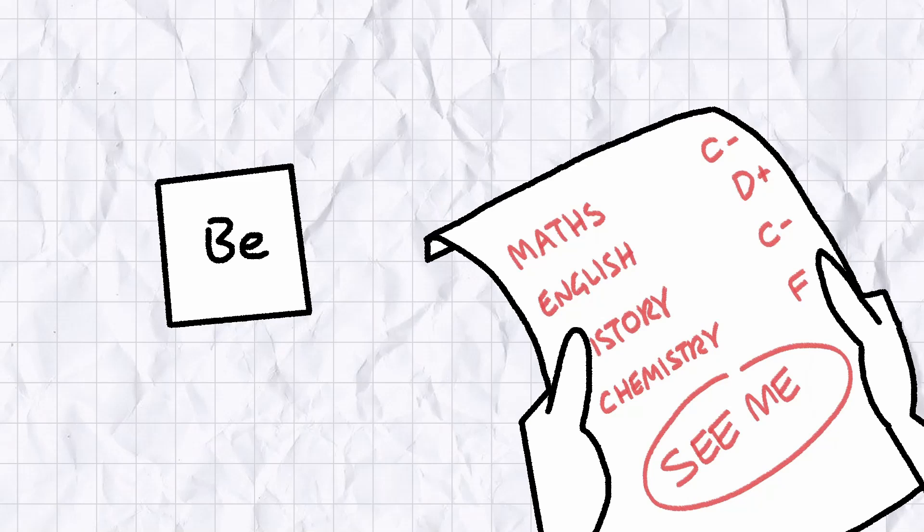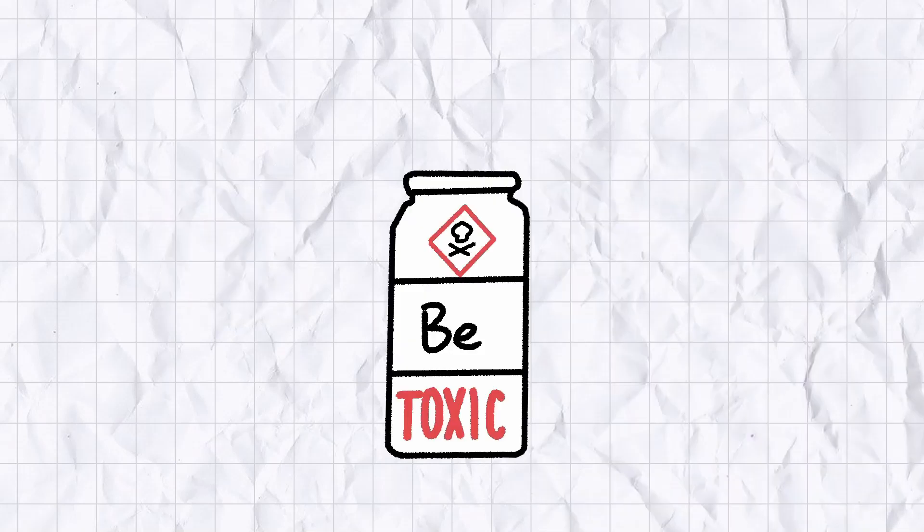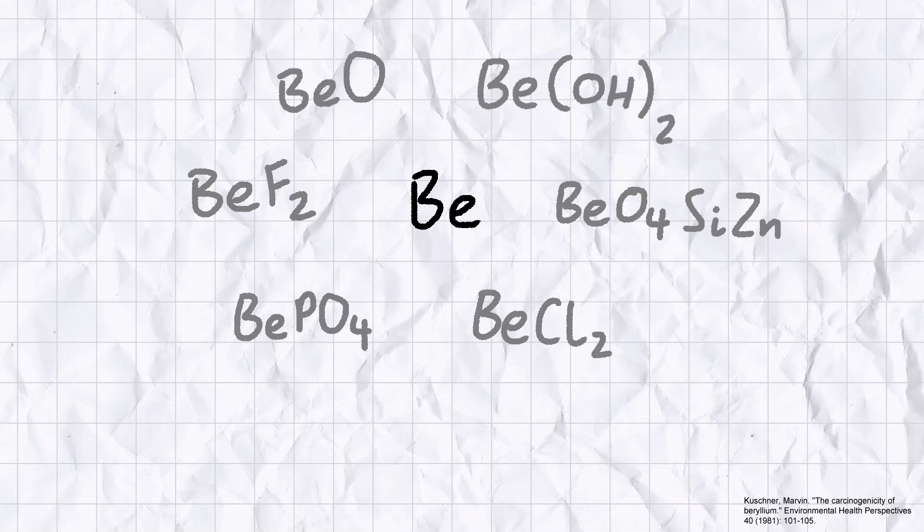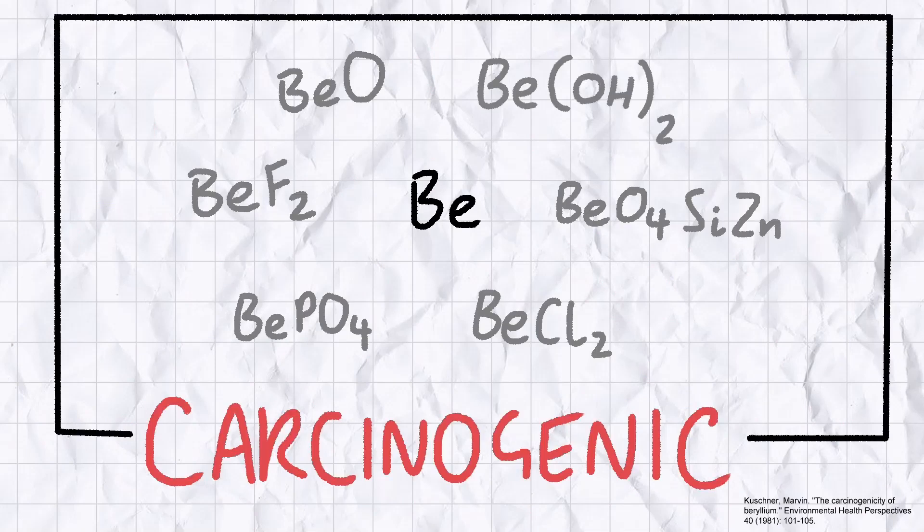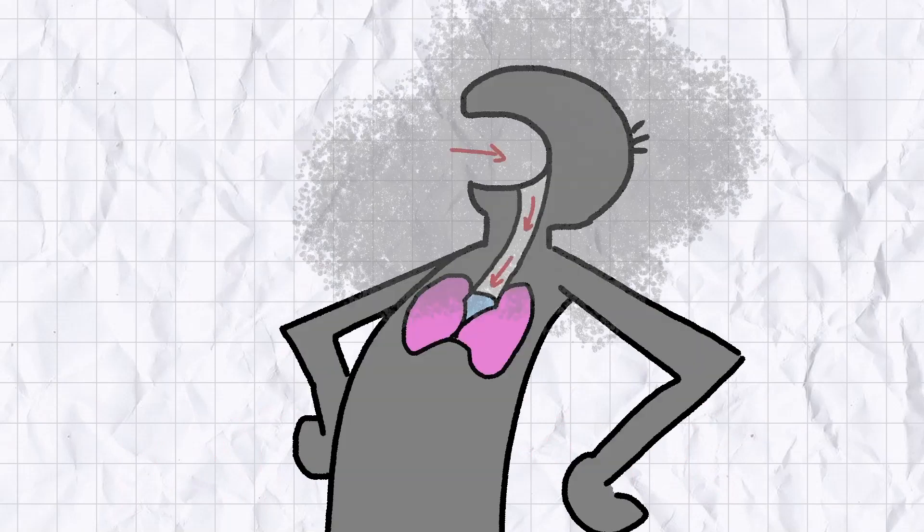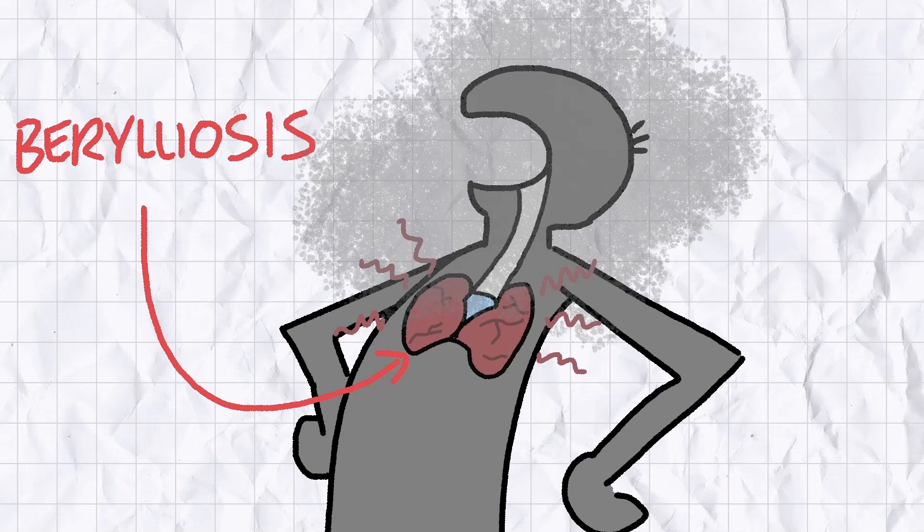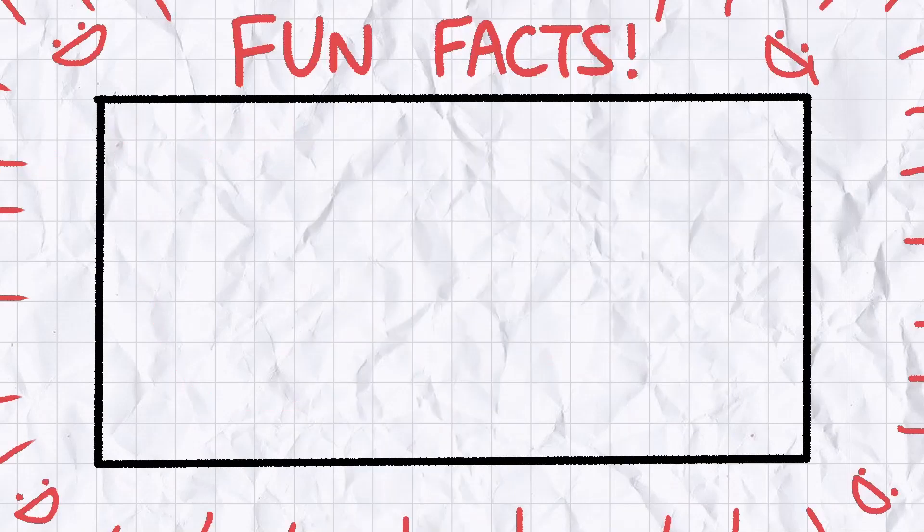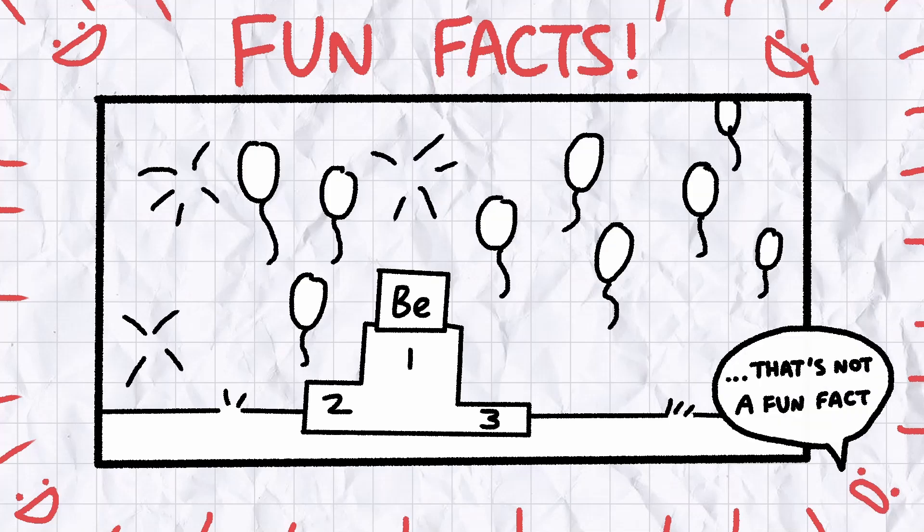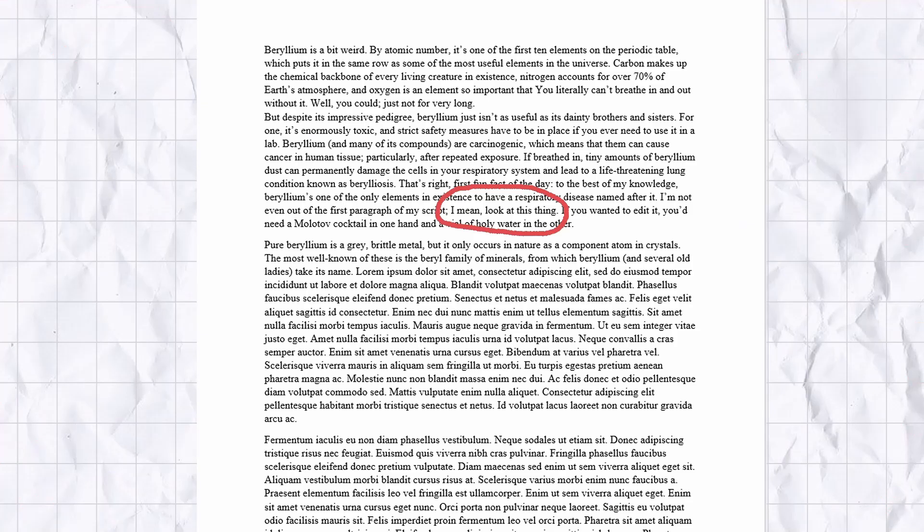But despite this impressive pedigree, beryllium just isn't as useful as its brothers and sisters. For one, it's enormously toxic and strict safety measures have to be in place if you ever need to use it in a lab. Beryllium and many of its compounds are carcinogenic, which means they can cause cancer in human tissue, particularly after repeated exposure. If breathed in, tiny amounts of beryllium dust can permanently damage the cells of your respiratory system and lead to a life-threatening lung condition known as berylliosis. That's right, first fun fact of the day. To the best of my knowledge, beryllium's one of the only elements in existence to have a respiratory disease named after it.